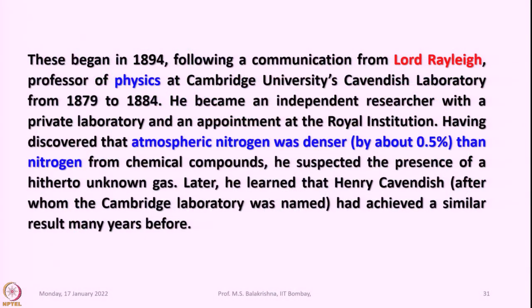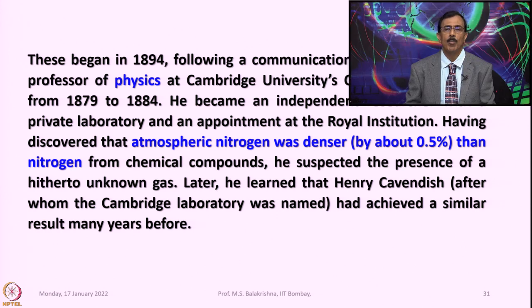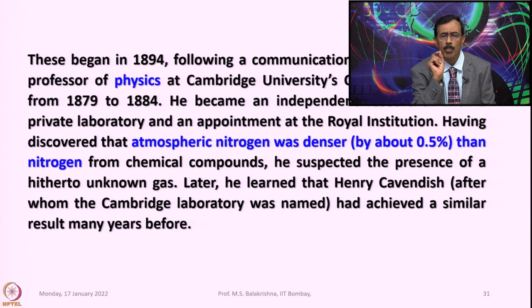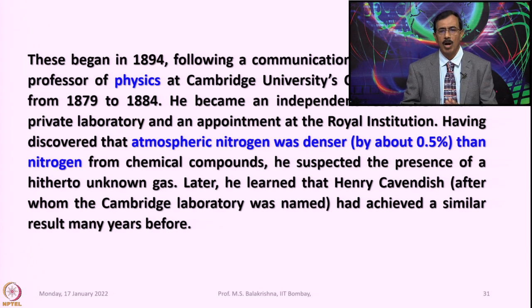This began in 1894 following a communication from Lord Rayleigh, professor of physics at Cambridge University's Cavendish Laboratory from 1879 to 1884. He became an independent researcher with a private laboratory and an appointment at the Royal Institution. Having discovered that atmospheric nitrogen was denser by about a very minute 0.5 percent than nitrogen from chemical compounds...